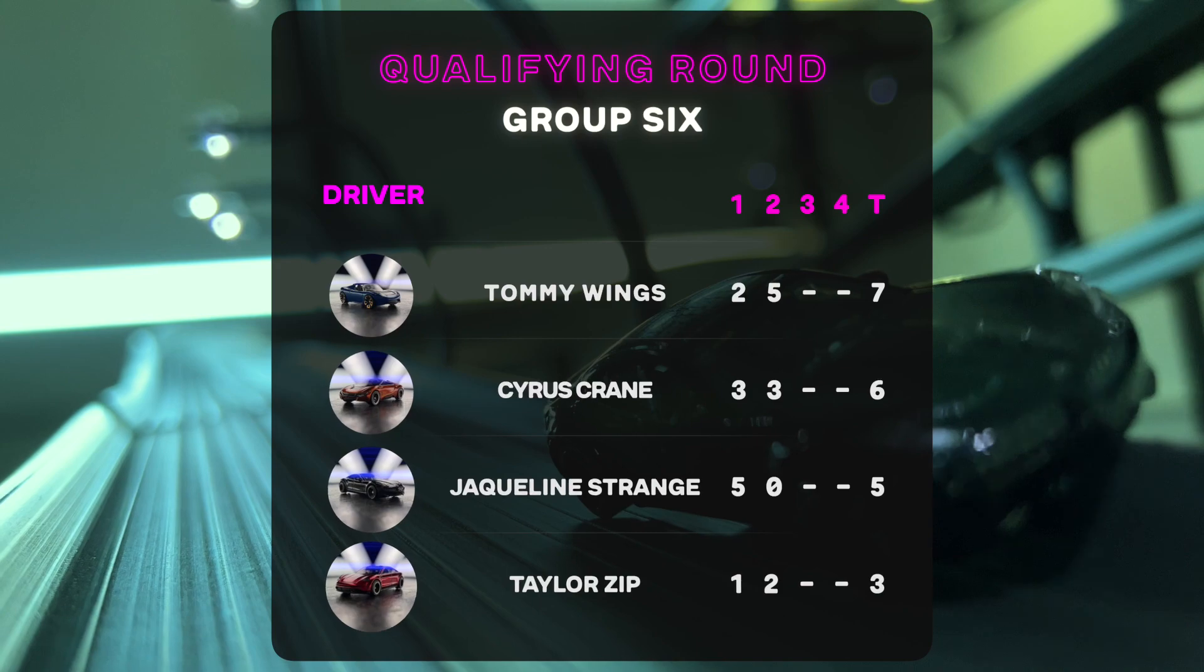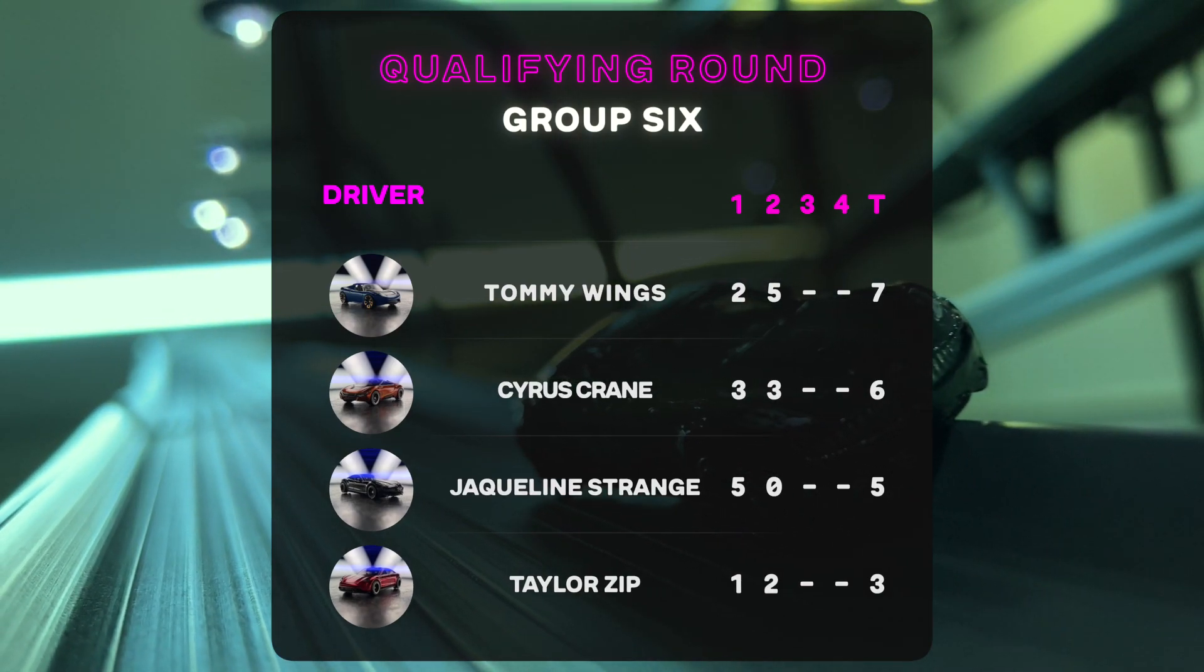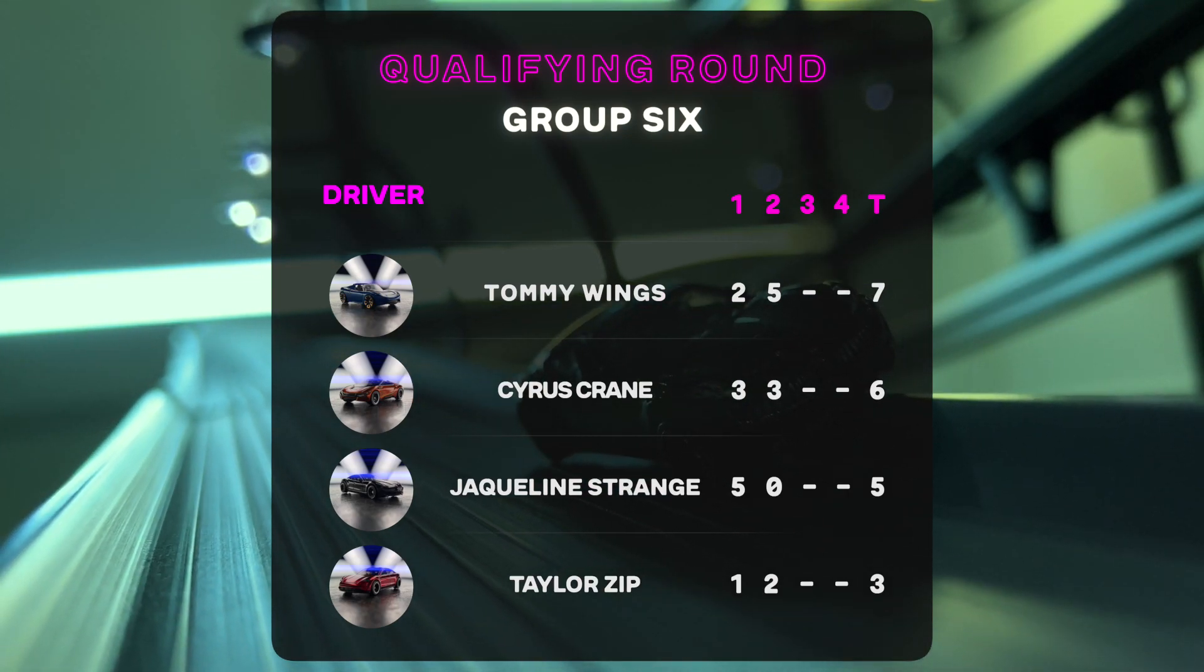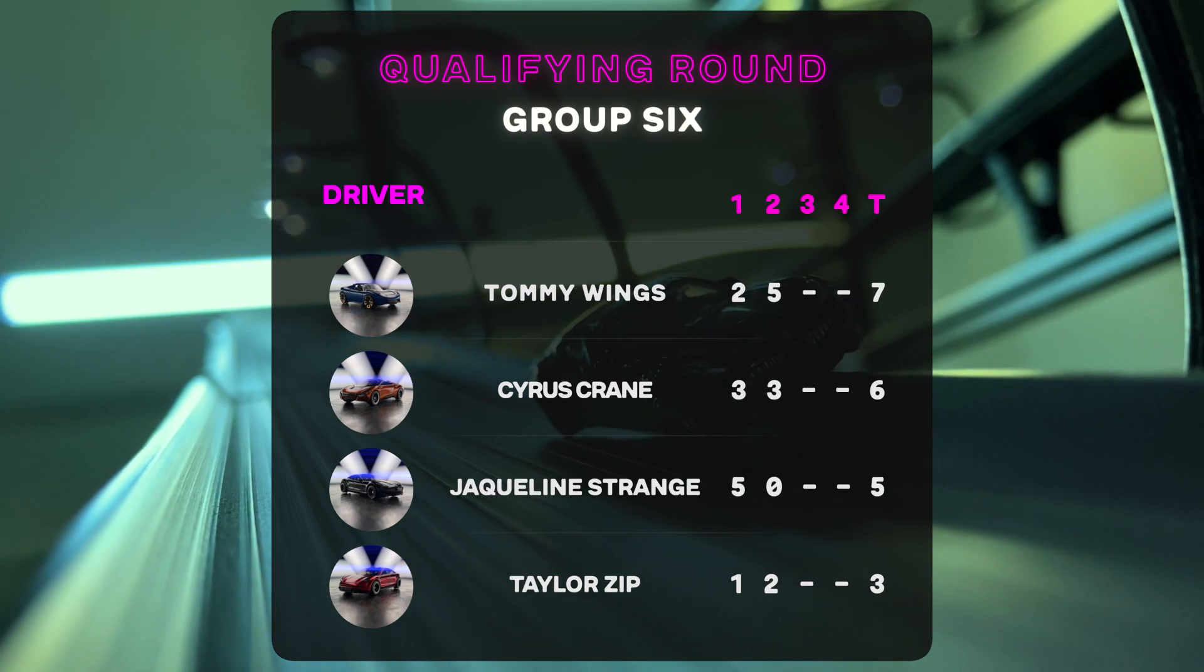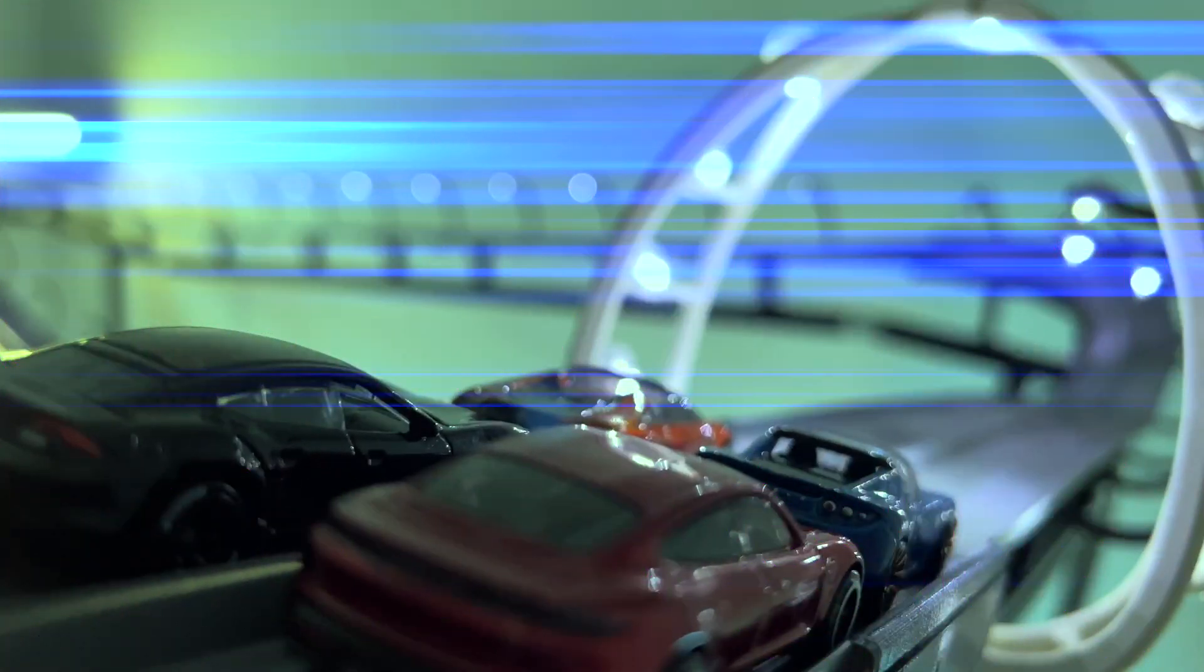Let's see where our drivers stand now. Tommy Wings shoots up to first position with 7 points. Jacqueline Strange plummeting to third place from the top position. Cyrus Crane staying steady with two second-place races. Always keep an eye on those who consistently take second place. It's a not-so-glamorous way to stay near the top of the leaderboard, and he's done it all from the back row. Now in front, let's see what Crane can do side-by-side with Tommy Wings.